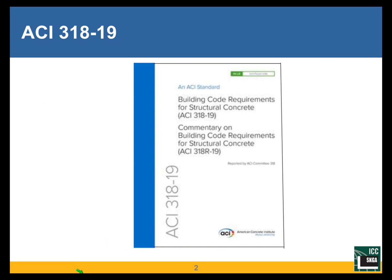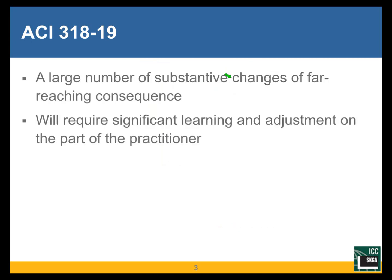ACI 318-19 looks exactly the same on the outside as 318-14. Unless you look at the date, it looks exactly the same except for a bit of color. Now inside, there is a lot of color. The figures are colored, and the page headings are colored. So that is a difference that will jump out at you as soon as you open the book.